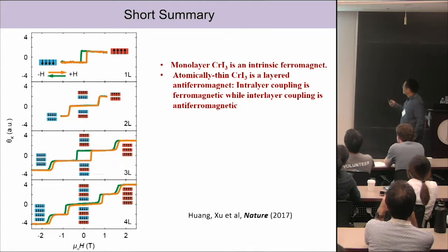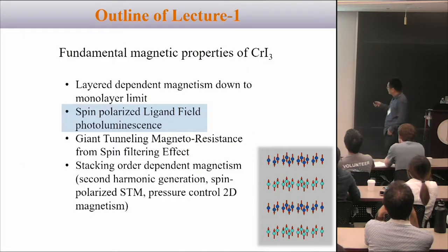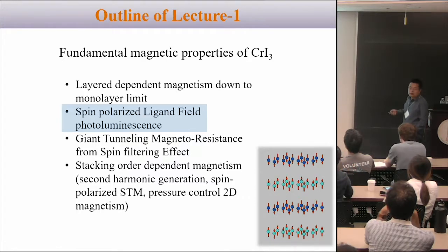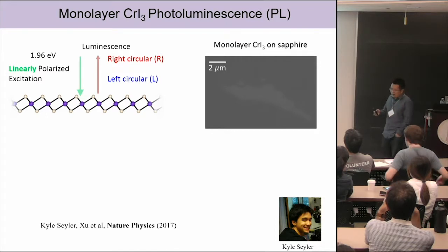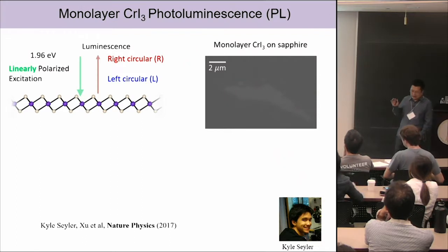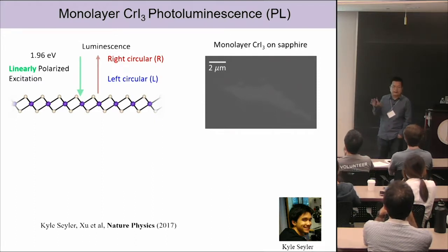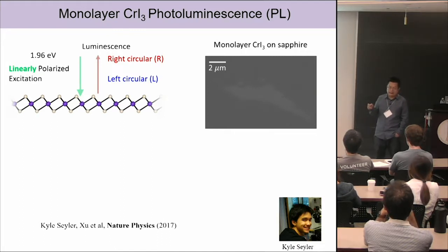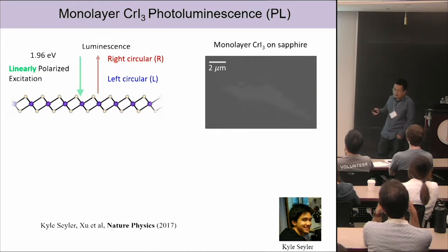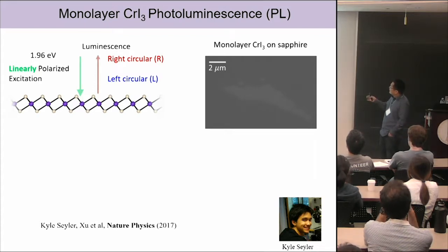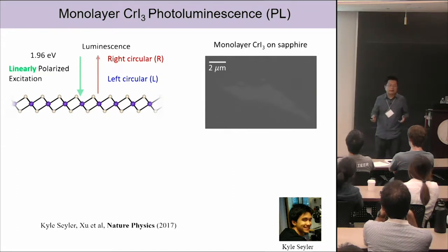The next question I want to address is the optical property of the system. I'll talk about the spin states, the ligand field, and the photoluminescence. Before we started, I looked into the literature — when we started, there were only about five papers on chromium triiodide, and no single report on photoluminescence from magnetic insulators with intrinsic magnetism. For any van der Waals crystal thinned down, there's no guarantee you'll see luminescence. The basic idea: if it's an insulator, there's a gap — shine light and you should see luminescence. But this is not always true.